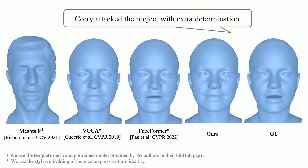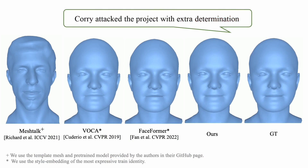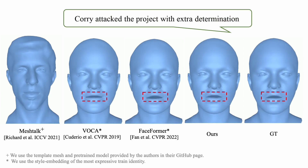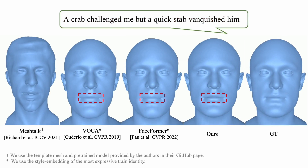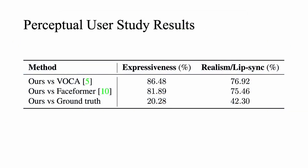We compare our method against state-of-the-art methods. On the Voca set, our method produces personalized facial animation with higher realism and lip closures than state-of-the-art methods. We conducted a perceptual study that shows the importance of style, lip closure, and realism. Our method consistently outperforms Voca and FaceFormer on realism and expressiveness. We also see that our method achieves similar realism and lip sync as ground truth.